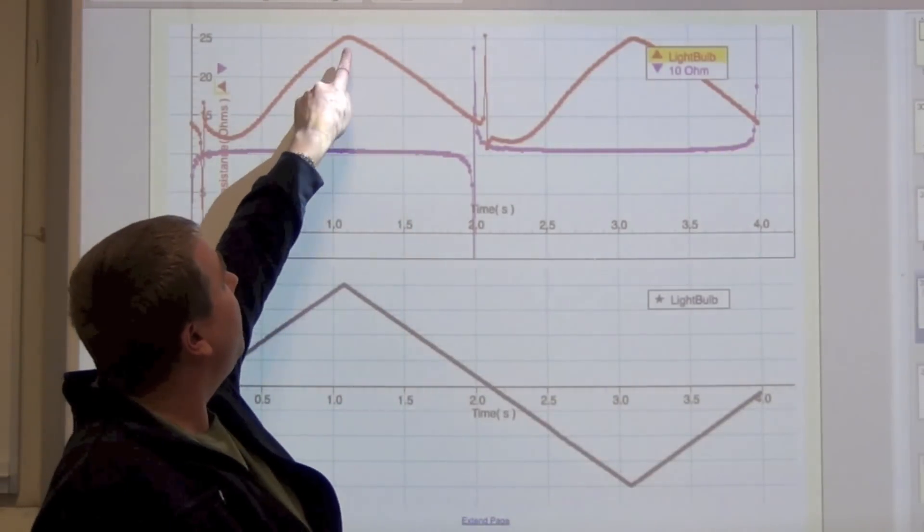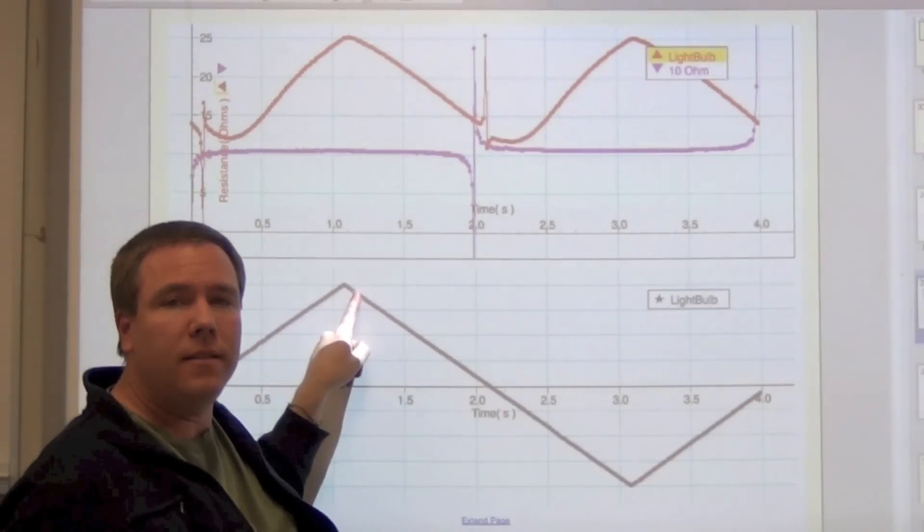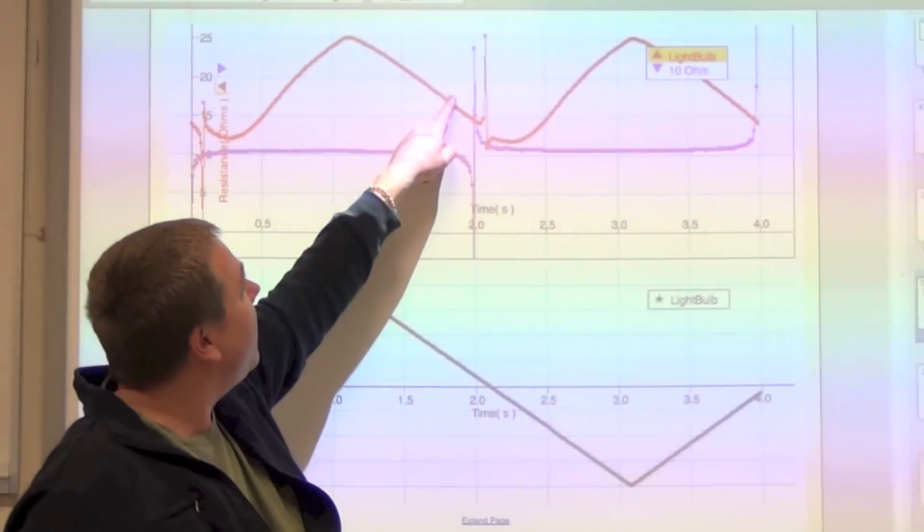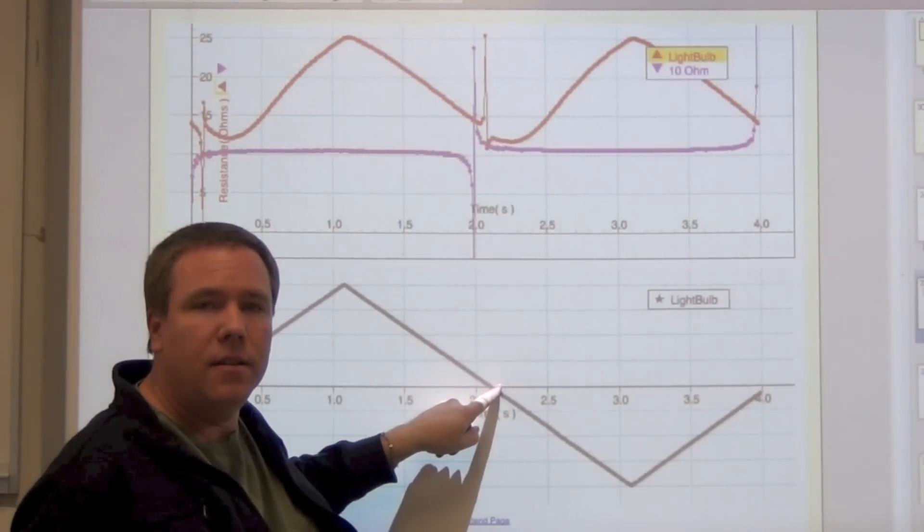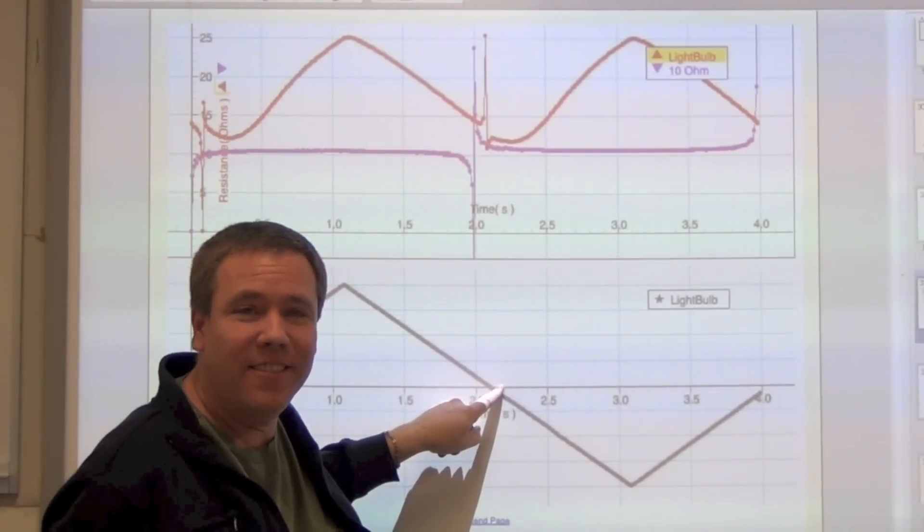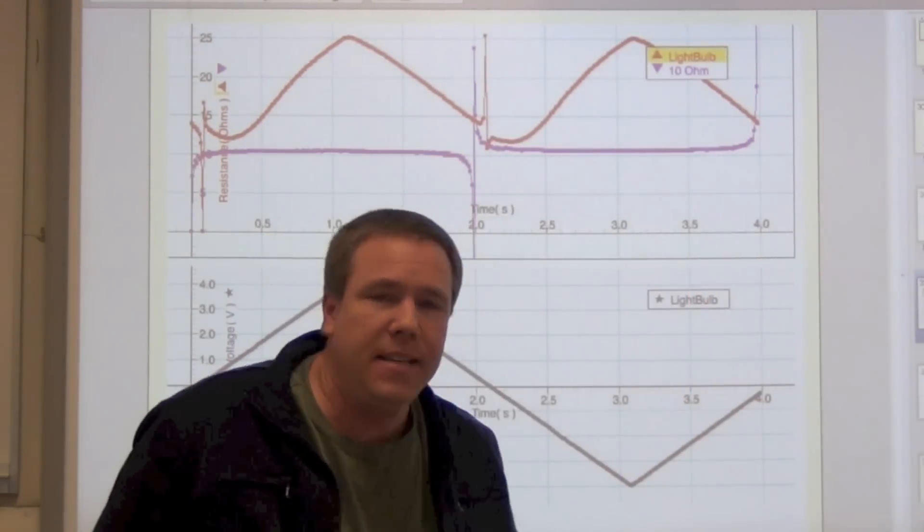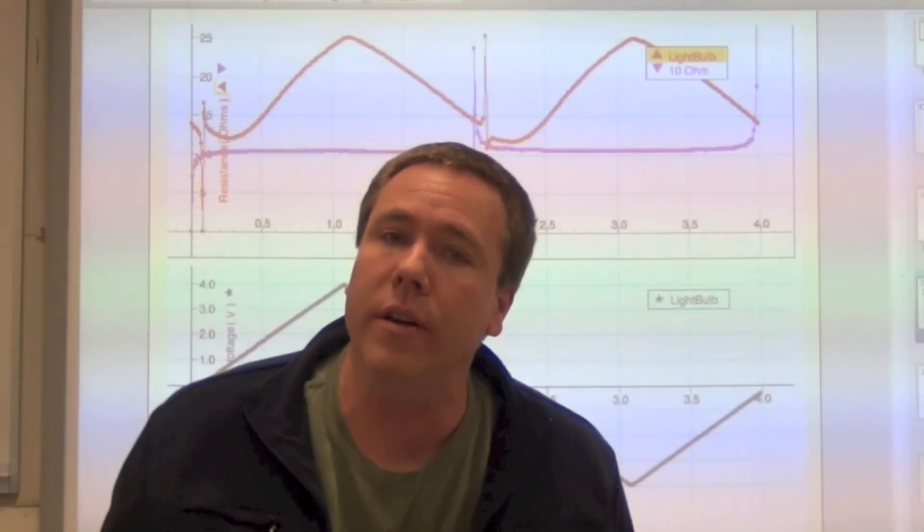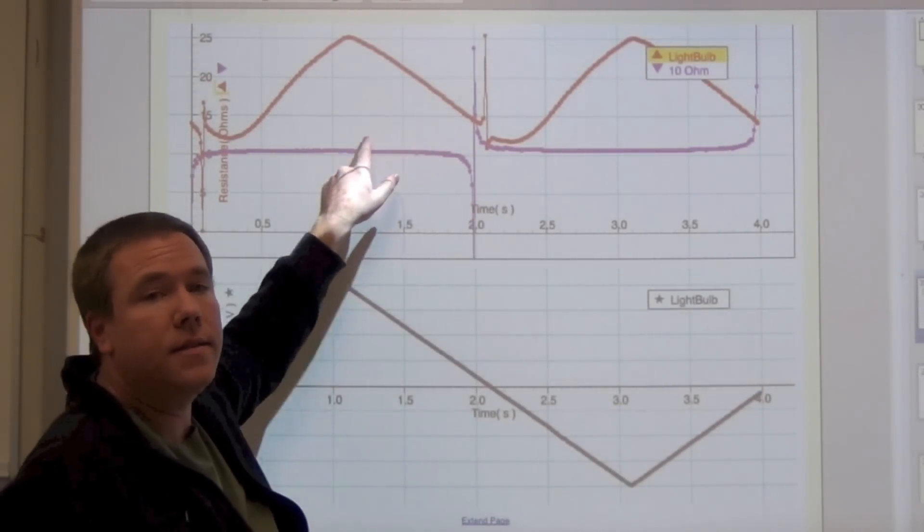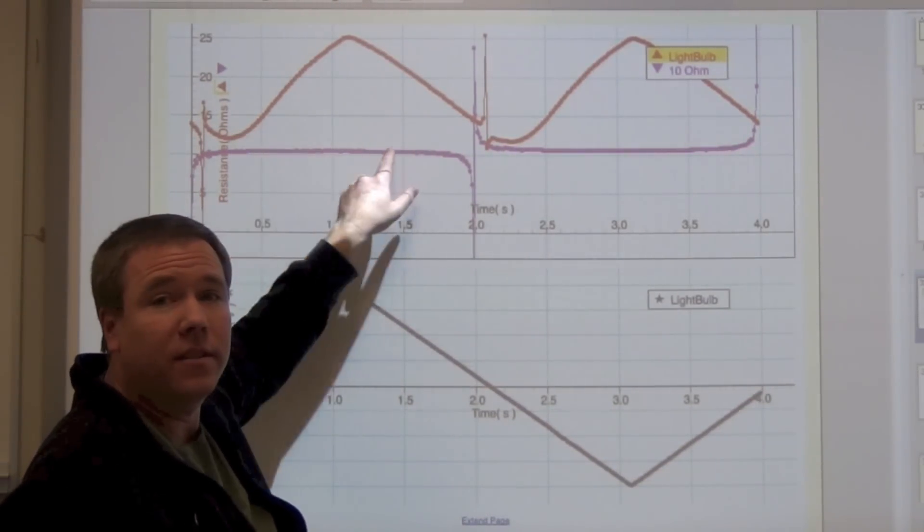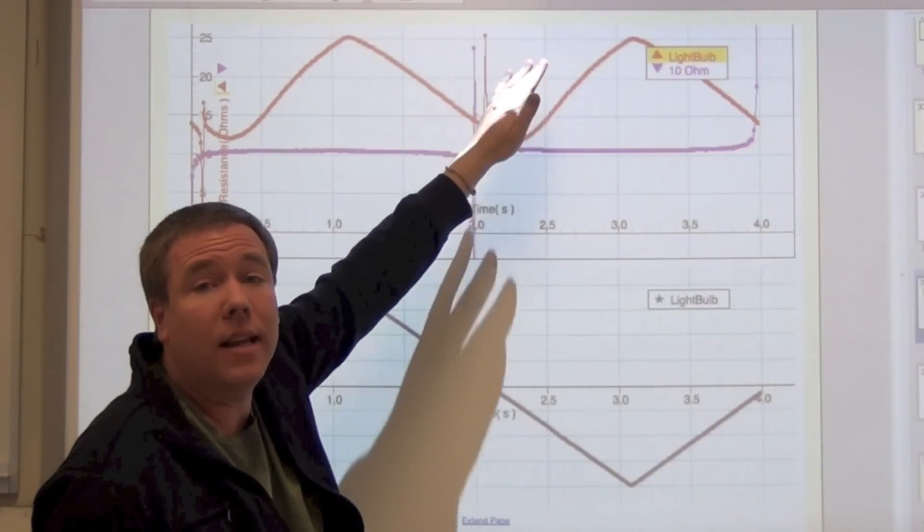But here we have the light bulb. And here we have a peak in resistance. And that's when the voltage has peaked. And right here, we have the lowest resistance. And that's when the voltage is zero. And then it goes back up and then it goes down. So we can see that the resistance of the light bulb is just changing at this low frequency. The resistor actually looks like this. Just a horizontal line. This is maybe the 10 ohm resistor. Constant resistance as compared to that of the light bulb.